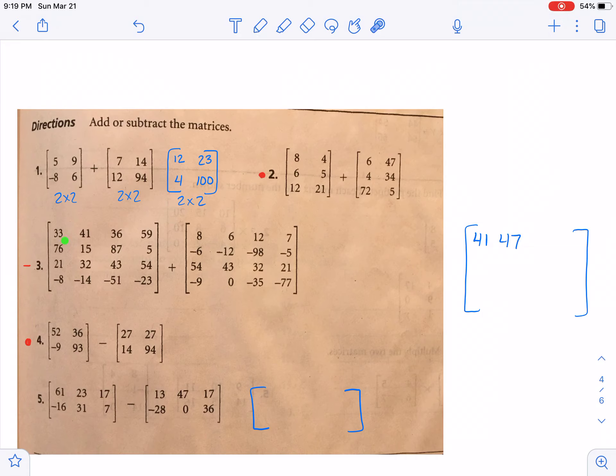Going to the second row, we have seventy-six and a negative six, which would be seventy. Then a fifteen and a negative twelve combine to give us three. Then twenty-one and fifty-four makes seventy-five. Then thirty-two and forty-three is also seventy-five. Then we're on a negative eight and a negative nine. That's a negative seventeen. And negative fourteen plus zero is negative fourteen. So then you will have these two columns to do.